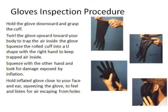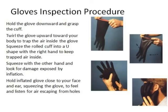For the glove inspection procedure: hold the glove, turn it outward, and grab the cuff. Roll the glove upward toward your body to trap air inside. Squeeze the rolled glove into a U-shape with the right hand to keep the trapped air inside. Then squeeze with the other hand and look for damage exposed by inflation. Hold the inflated glove close to your face and ear — it is just like checking a balloon. If there is any problem with your PPEs, this process will help you detect it.